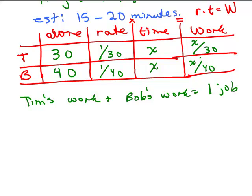All right, what was Tim's work? x/30. That's how much he got done. Bob, x/40. And what did they get done? One complete job.